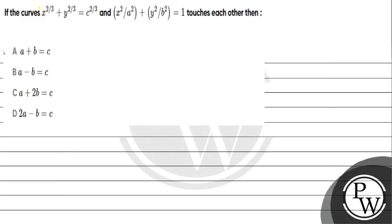Hello guys, this question says x to the power 2 by 3 plus y to the power 2 by 3 is equal to c to the power 2 by 3, and x upon a plus y upon b is equal to 1. The options are: a plus b equal to c, a minus b equal to c, a plus 2b equal to c, or 2a minus b equal to c.